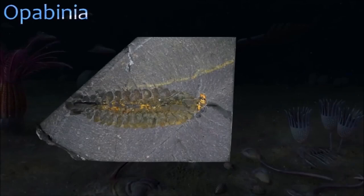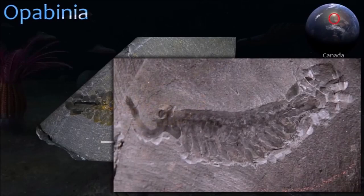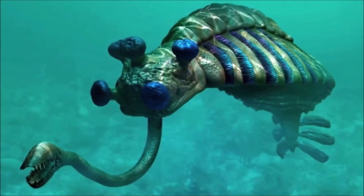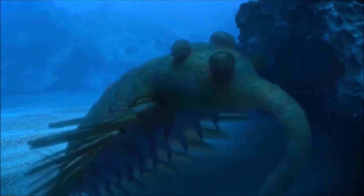Opabinia is one of the strangest animals found in Canada's Burgess Shale fossil bed. Unlike any other animal, its head had five prominent eyes — two sets of pairs and one central eye. Extending from the front of its head was a long flexible trunk-like proboscis ending in a pod-shaped organ bearing small spines, probably used to grasp prey and pass it up to its mouth. Its elongated body was composed of 16 segments, each with a flap-like lateral lobe with gills on the underside, and a tail with three flaps.